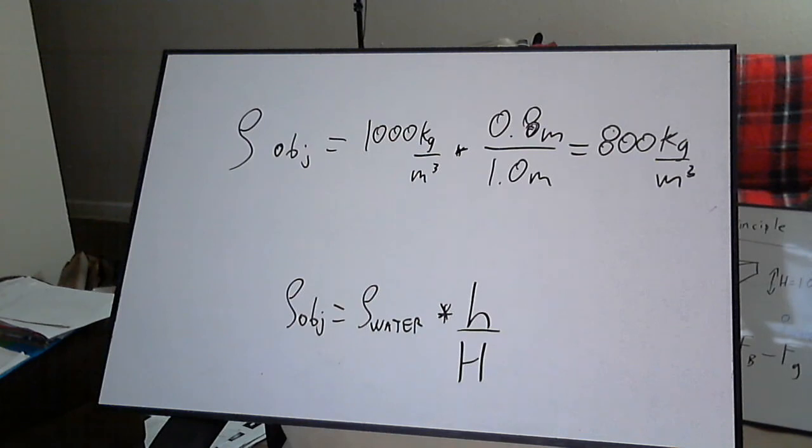Finally, we plug in numbers with units and solve the problem. In this case, the density of this unknown object is 800 kg per cubic meter.